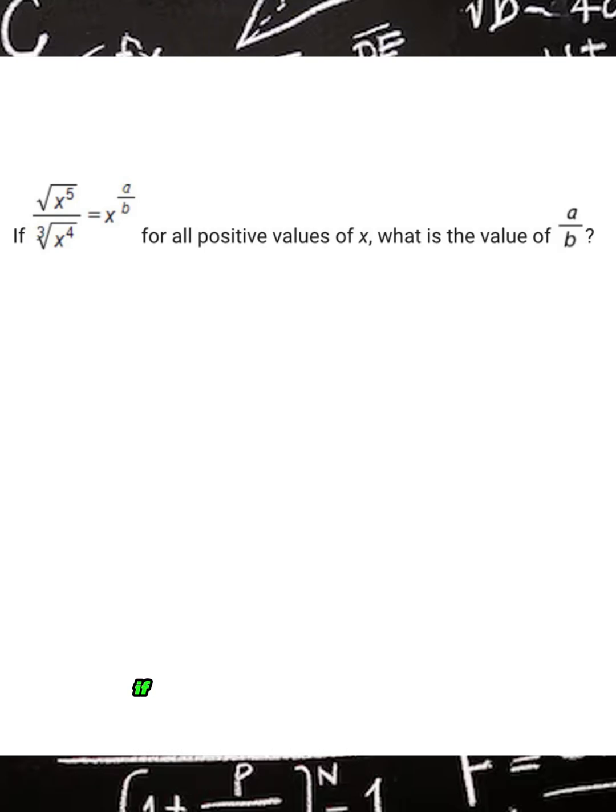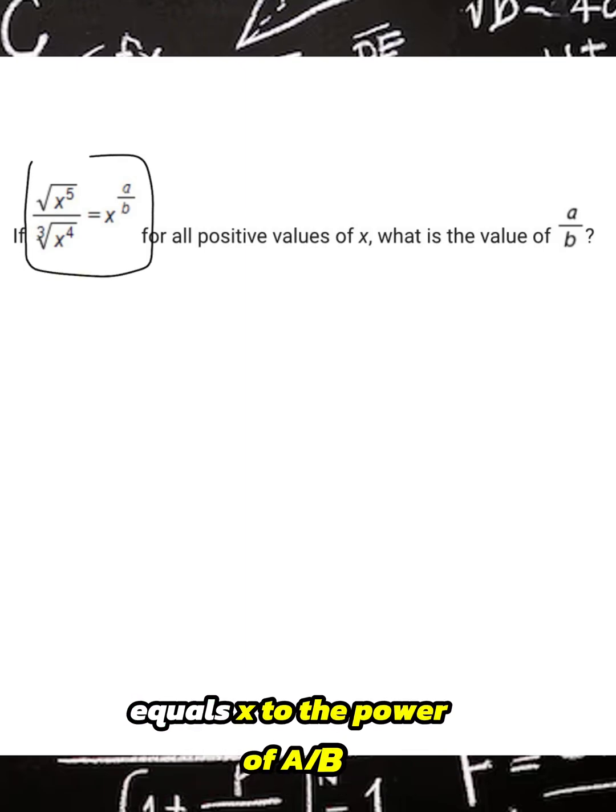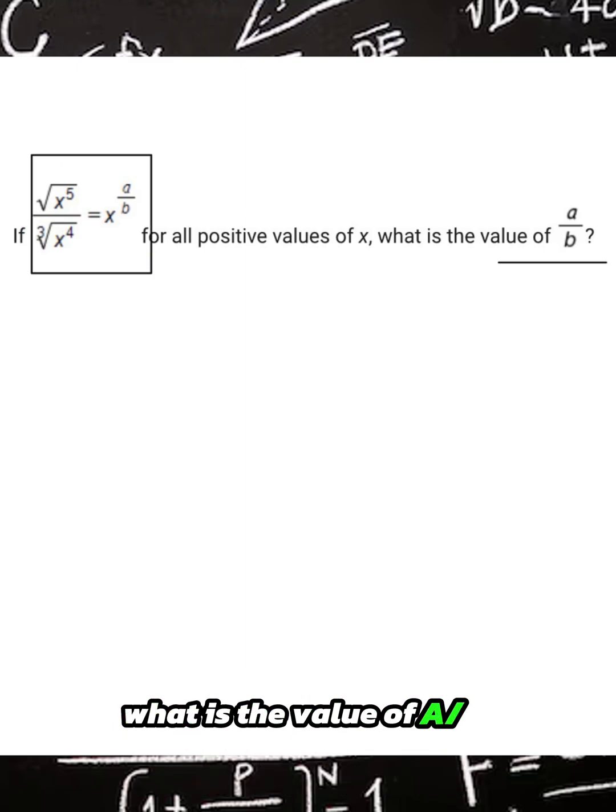Can you simplify this? If square root x to the power of 5 over cube root x to the power of 4 equals x to the power of a over b for all positive values of x, what is the value of a over b?